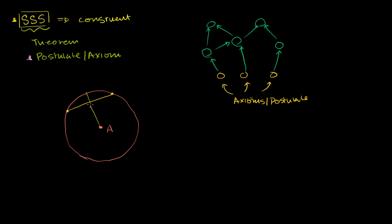When I say bisecting it, it means it splits that line segment in half, so the length of this segment is going to be equivalent to the length of that segment. I've set it up: I have a circle, and this radius bisects this chord. What I want to prove — the goal here — is that it bisects this chord at a right angle. Let me add some points: let's call this B, this C, this D, and I want to prove that segment AB is perpendicular to segment CD. I'm going to prove it using the side-side-side theorem, postulate, or axiom.